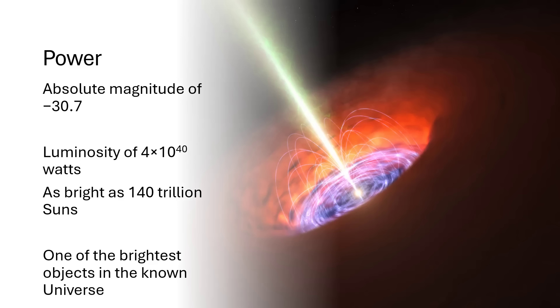Its absolute magnitude would be the brightness you saw if it were at a distance of 10 parsecs, which is 32 light years away. If this was 32 light years away, it would still be 2.5 to the power 7 times brighter than the sun is in the sky now. It's as bright as 140 trillion suns. That's a thousand times brighter than all the stars in the whole Milky Way galaxy put together. This makes TON 618 one of the brightest and most powerful objects in the known universe.